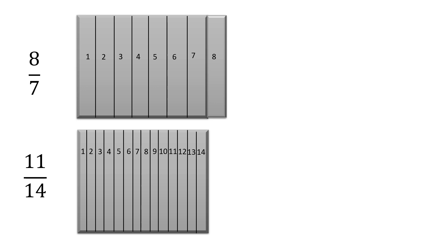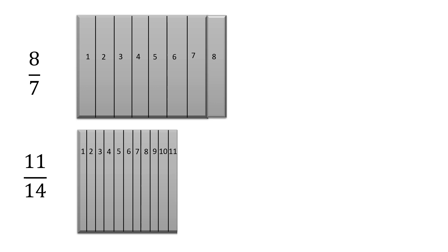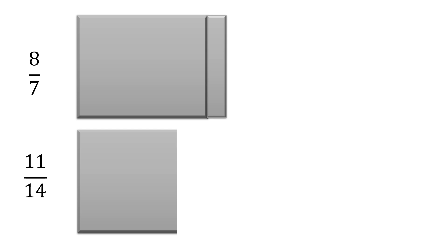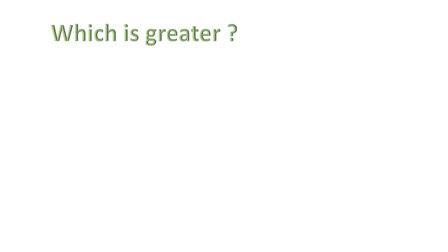When dividing into 14 equal parts, each part becomes smaller because there are more parts. Out of these 14 parts, we use 11. Now if we remove all the divisions and compare the blocks visually, you can clearly see that the 8/7 block is greater. That is why 8/7 is the greater fraction.